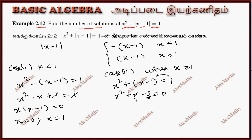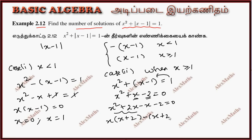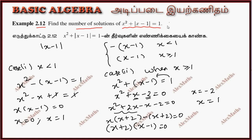Splitting by product minus 2 and sum 1, we get x squared plus 2x minus x minus 2 equals 0, giving factors x plus 2 and x minus 1. So x equals negative 2 or x equals 1. However, since we require x greater than or equal to 1, x equals negative 2 is not valid — that is not possible.